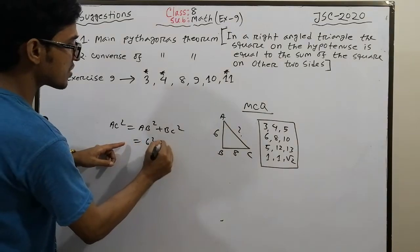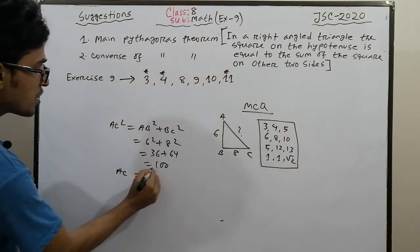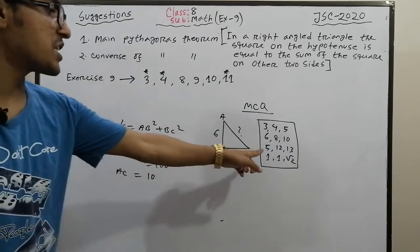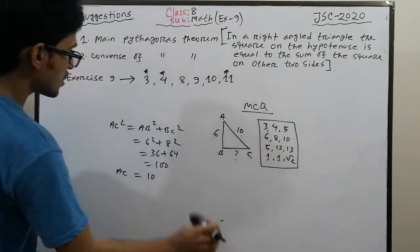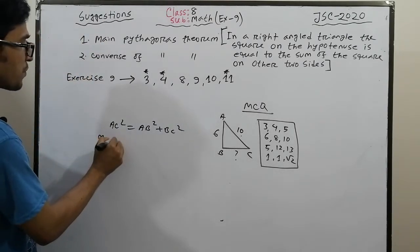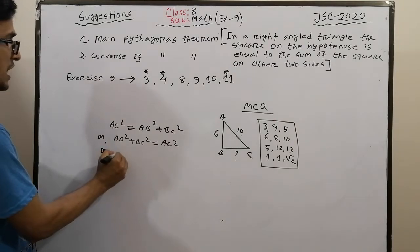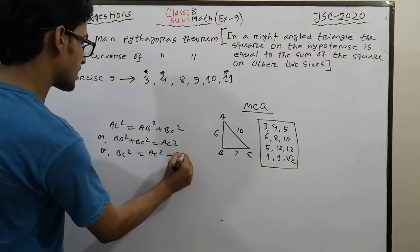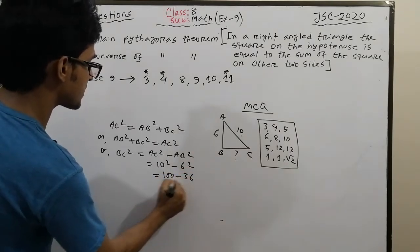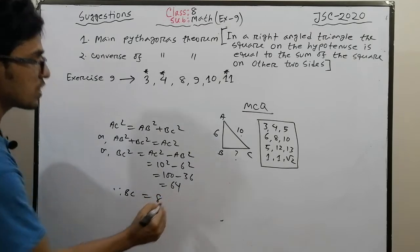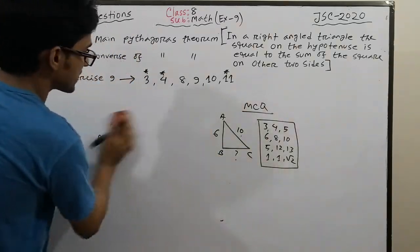You can rearrange the formula to find any side. For example, BC² = AC² - AB². If AC is 10 and AB is 6, then BC² = 10² - 6² = 100 - 36 = 64, so BC = 8. The formula is applicable in any arrangement.